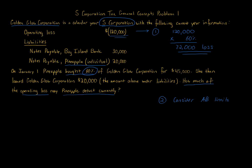Just like in partnership tax, we start with the amount paid for the ownership interest. Pineapple purchased the stock this year, so the stock adjusted basis is simply $45,000. In future years, basis increases from income allocated and taxed to the shareholder, additional contributions, or purchasing more shares. There are many ways to increase basis, including personally loaning money to the S corporation.